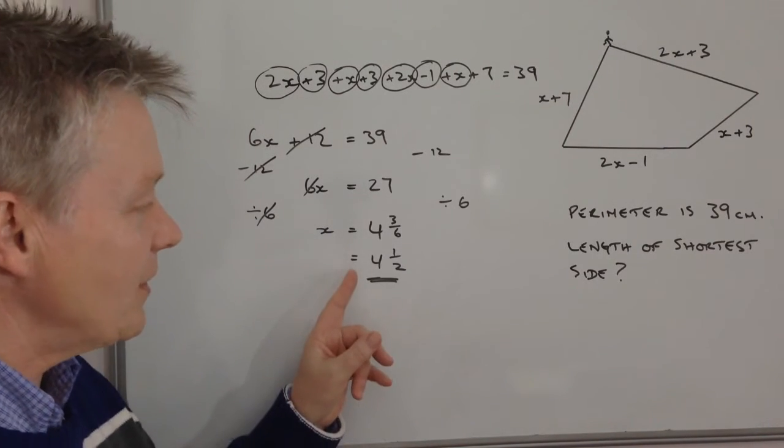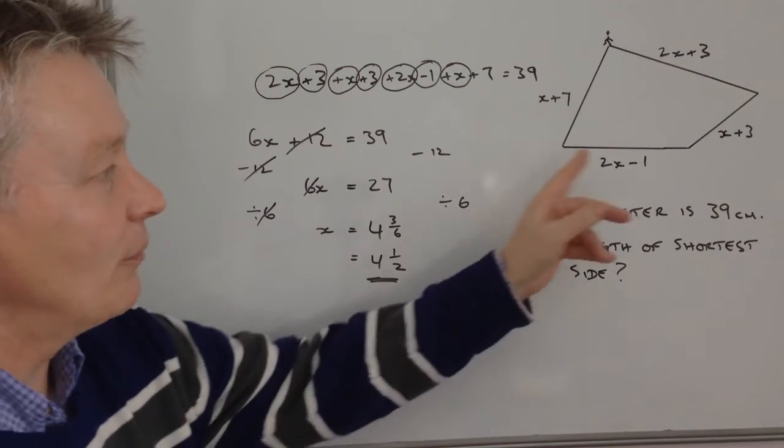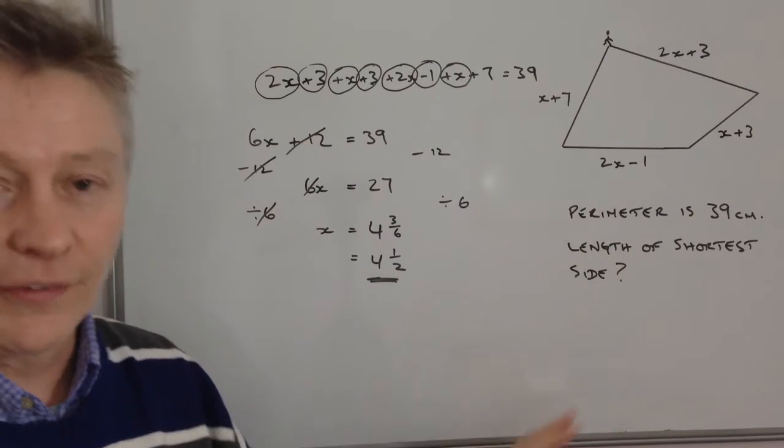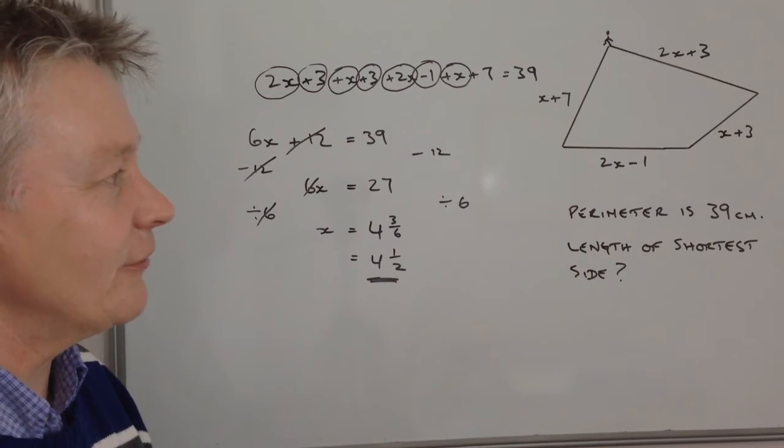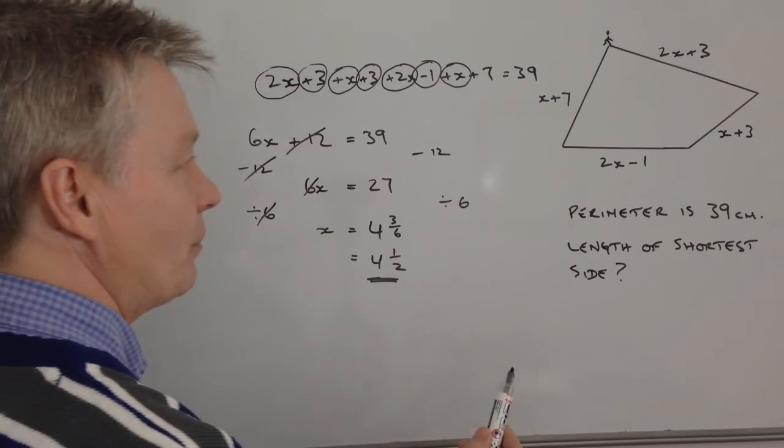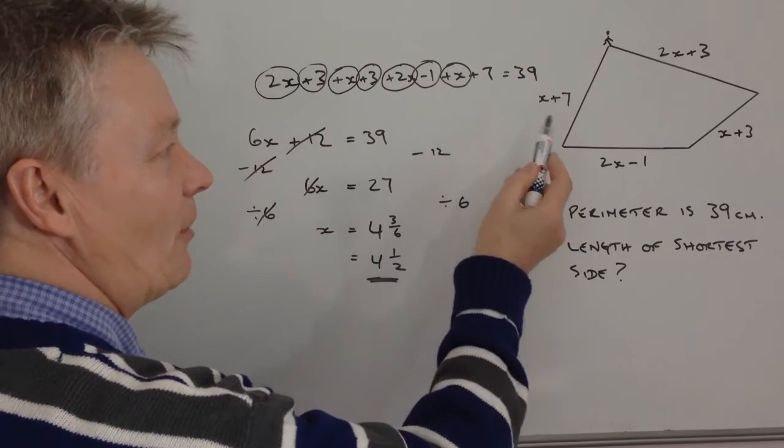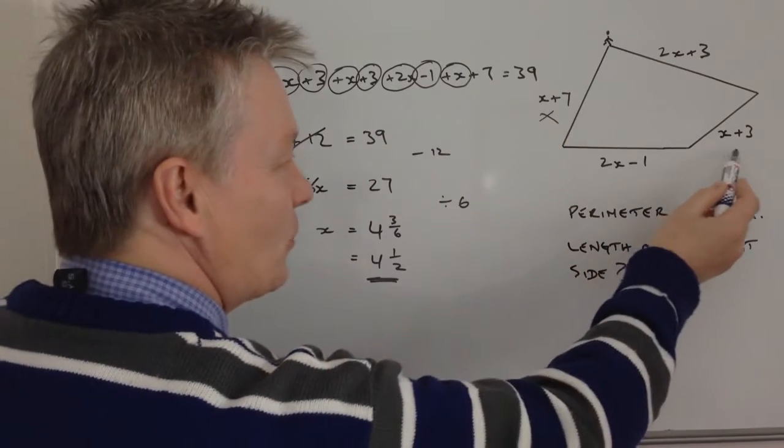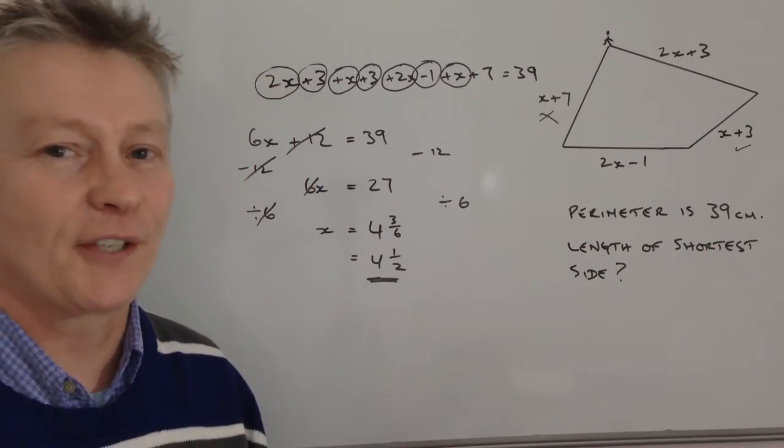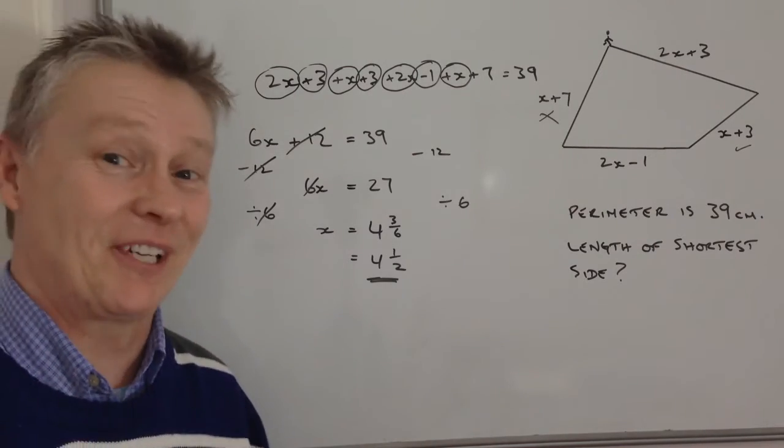Right, so what I need to do then is take that value of 4 and a half, and plug it into each one of these, and work out the length of the shortest side. Now I can kind of figure that out just by looking at it, that it's either going to be this one, maybe not, this one possibly, and also on the drawing itself it does look like the shortest side, so maybe I'm cheating a little bit.